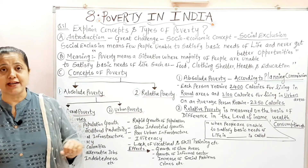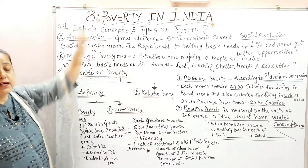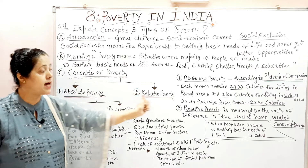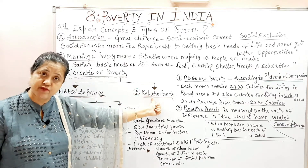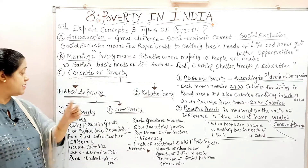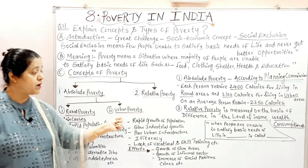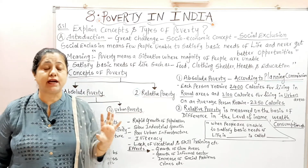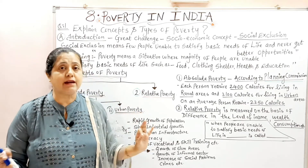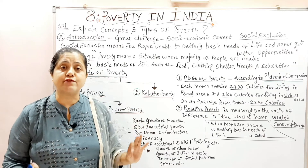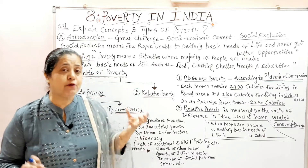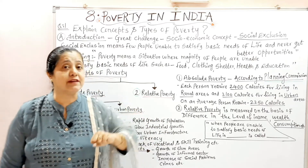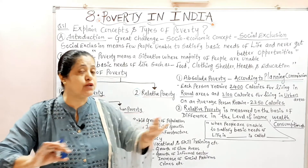Generally the question comes: explain the concepts of poverty. When we talk about concepts, those are absolute poverty and relative poverty. But when we talk about types, those are rural poverty and urban poverty. Absolute poverty means people who are clearly unable to satisfy basic needs of life — those who don't have enough income to satisfy their basic needs — they are considered as absolutely poor.